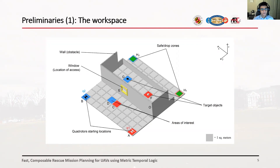Throughout this presentation we'll refer to a particular workspace. This is a customized CAD environment used for methods demonstration as well as experiments. The idea is that UAVs from their starting positions have to evacuate some targets at certain locations and take them to safety at marked locations. While doing so, they have to pass through a window E which has dimensions such that only one UAV can pass at a given time, so they have to avoid each other for collision, in particular at position C. The areas of interest on the map are marked with different letters.